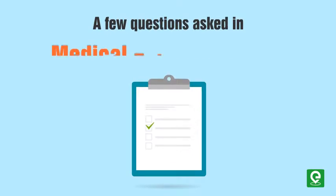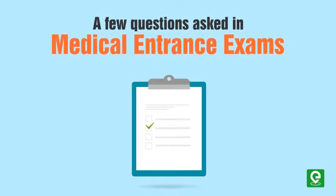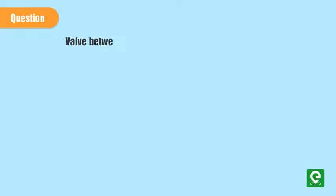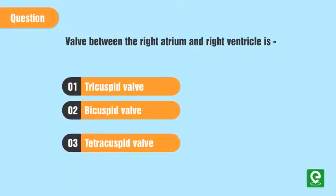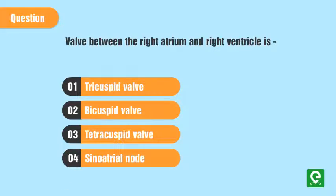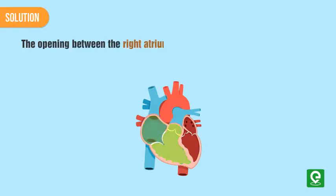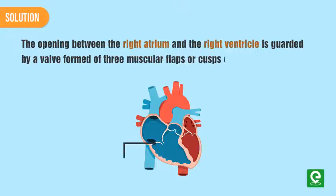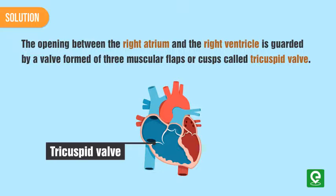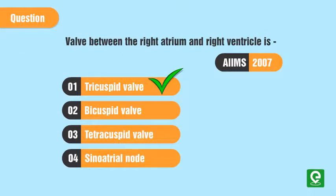Question from AIIMS 2007: The valve between the right atrium and right ventricle is — 1. Tricuspid valve, 2. Bicuspid valve, 3. Tetracuspid valve, 4. Sinoatrial node. Solution: The opening between the right atrium and the right ventricle is guarded by a valve formed of three muscular flaps or cusps called the tricuspid valve. Hence, option 1 is the correct answer.